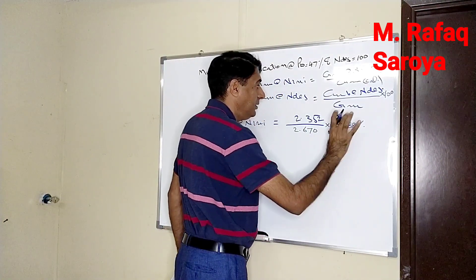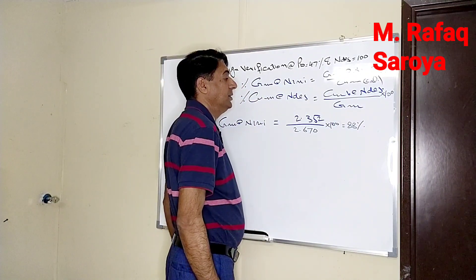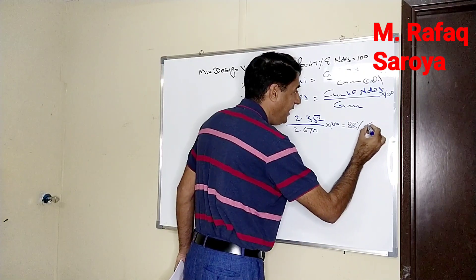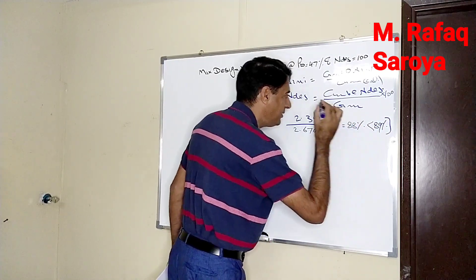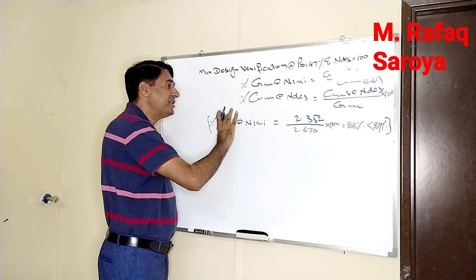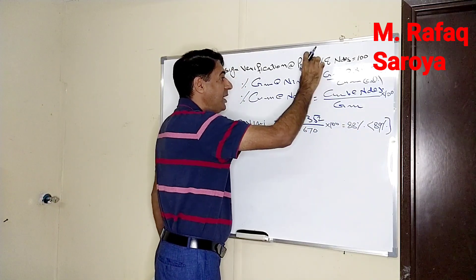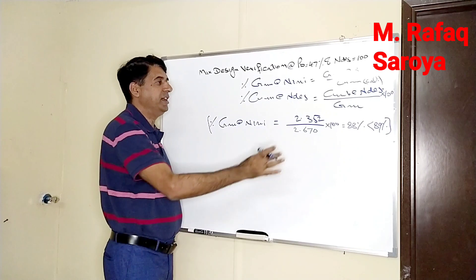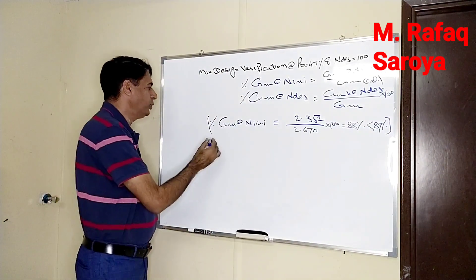So it means 88 is less than 89%, so this result shows that this percentage of GMM at this amount of binder content is acceptable because it is clearly shown by this result. Similarly, we will go to the next step.